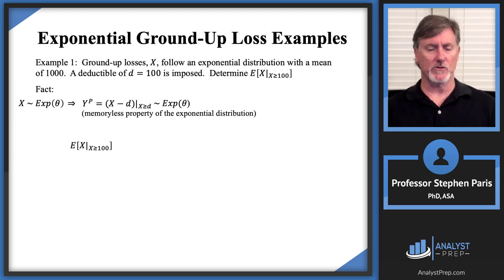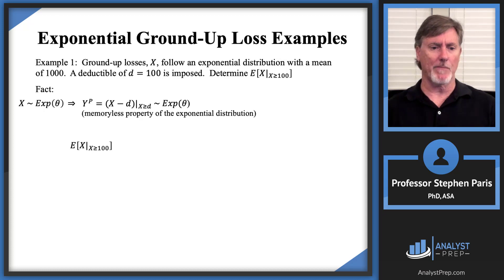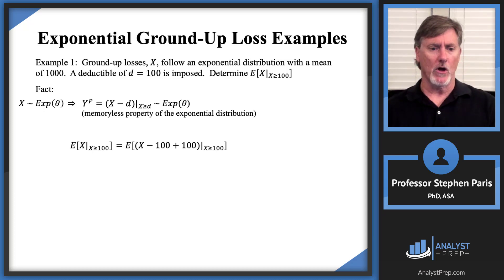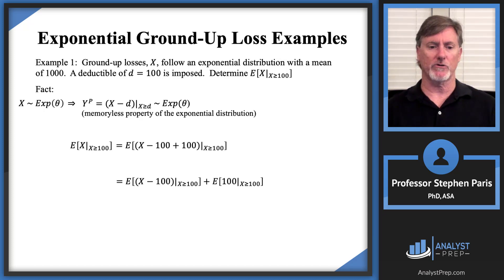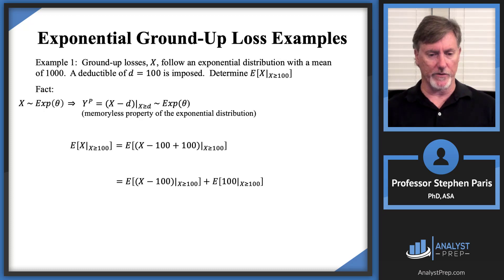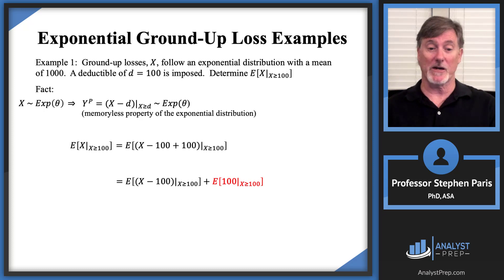I'm seeking the expected value of cap X given that cap X is greater than 100. I'll play a little trick: I'll rewrite cap X as cap X minus 100 plus 100, then group those together to get the expected value of cap X minus 100 given cap X is greater than 100, plus the expected value of 100 given cap X is greater than or equal to 100. That second term — the expected value of a constant 100 — is just 100.